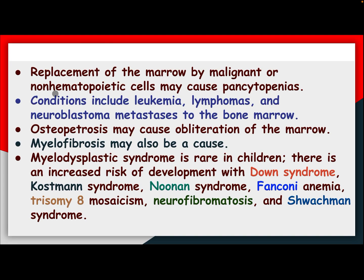Replacement of marrow by malignant or non-hematopoietic cells may cause pancytopenia. Conditions include leukemia, lymphoma, and neuroblastoma metastasis to bone marrow. Osteopetrosis may cause obliteration of the bone marrow, and myelofibrosis may also be the cause. Myelodysplastic syndrome is rare in children, with increased risk in Down syndrome, Kostmann syndrome, Noonan syndrome, Fanconi anemia, trisomy 8 mosaicism, neurofibromatosis, and Schwachmann-Diamond syndrome.